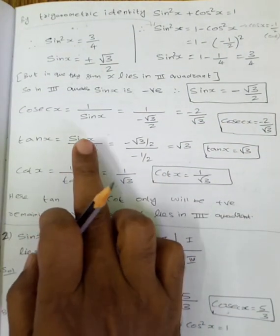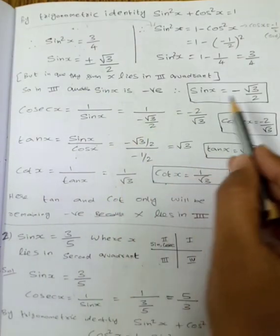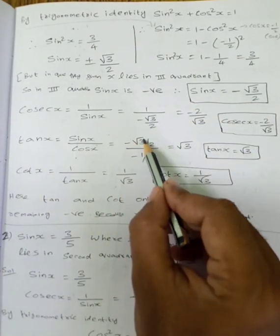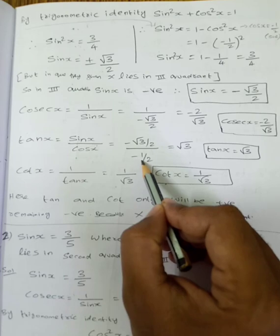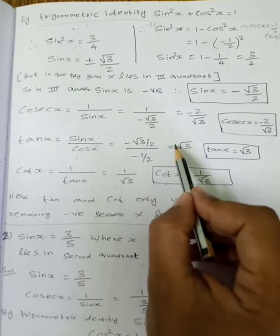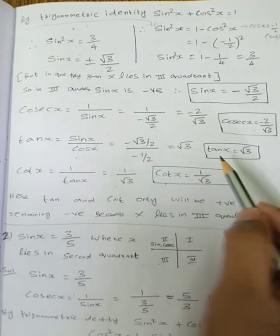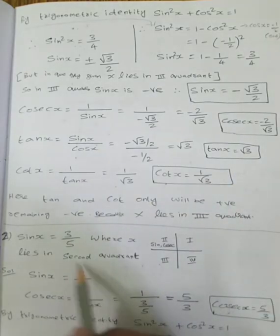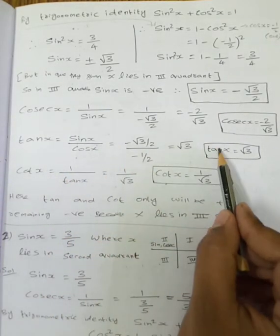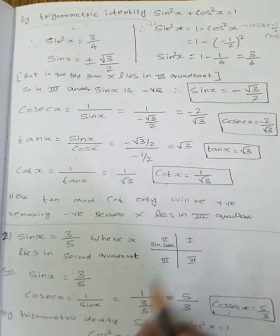So tan x equals sin by cos. Sin value is minus root 3 by 2, cos value is minus 1 by 2. The 2's cancel, so tan x equals root 3. So cot x equals 1 by tan x, which is 1 by root 3.